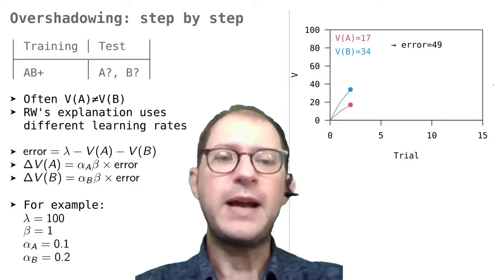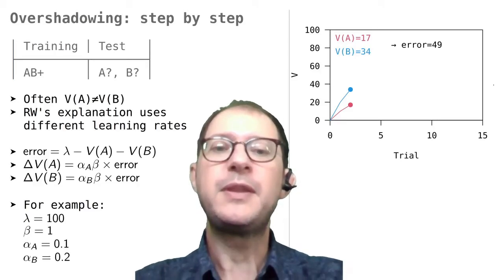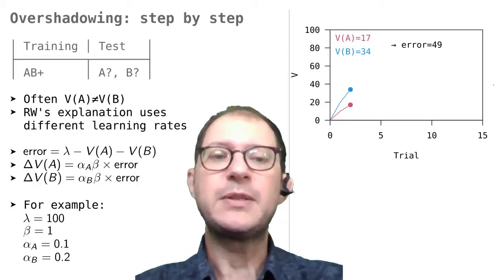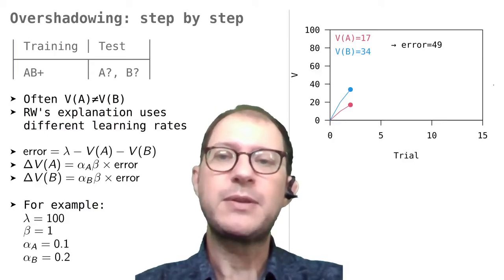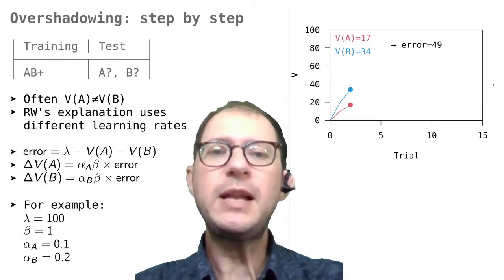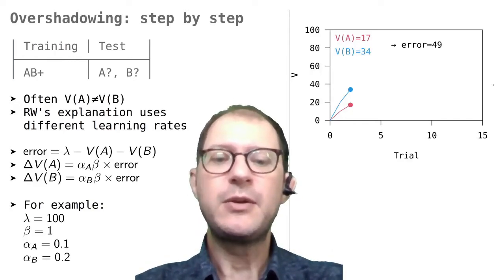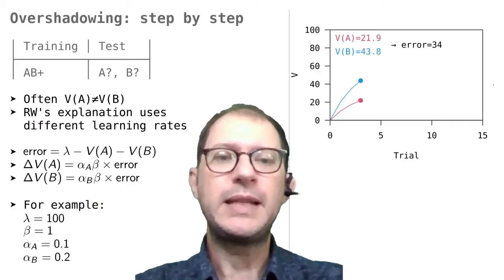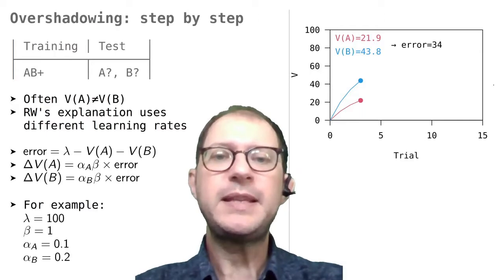After this update, the two values will be 17 for A and 34 for B. This also means that the error now is only 49, that is 100 minus 17 minus 34. If you calculate the next step in the same way, you will see that V(A) goes further up to 21.9, and V(B) to 43.8. We can see that because the learning rate for B is twice the learning rate for A, we also get that V(B) is always twice V(A).